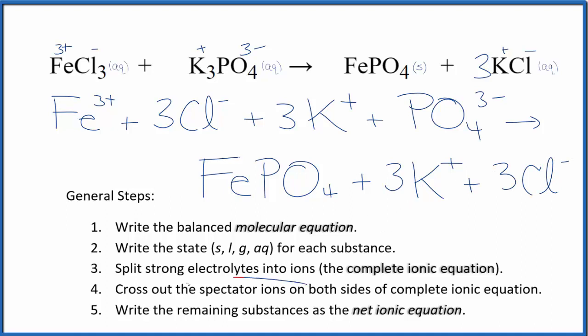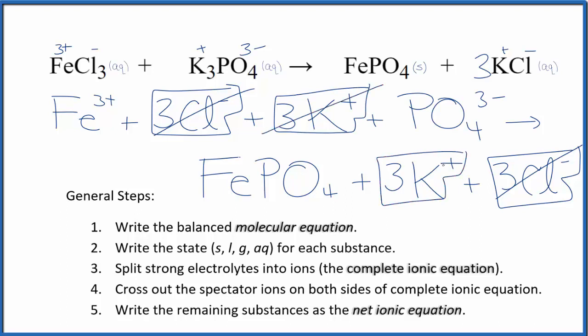Now, we can cross out spectator ions. They're on both sides. So when I look at the reactants here, and the products, I can see in the reactants there are 3 chloride ions, and in the products. These are spectator ions. We're going to cross those out. 3 potassium ions, and again, we have 3 potassium ions in the products. Spectator ions. Cross them out.